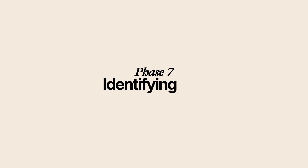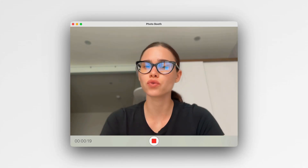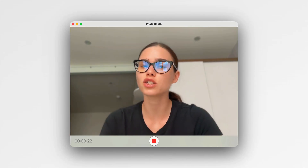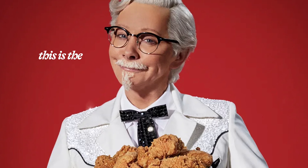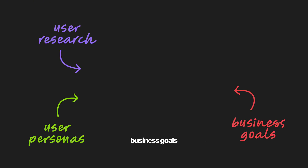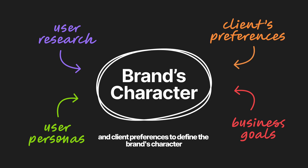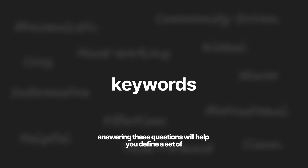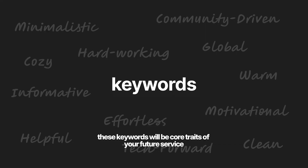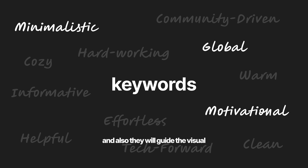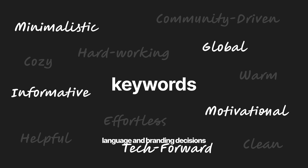Phase seven: identifying the tone of voice. Before jumping into UI research, I highly recommend identifying the tone of voice of the app — this will be the personality of the future service. Use your knowledge from user research, personas, business goals, and client preferences to define the brand's character. Ask yourself: is it formal or casual? Serious or playful? Respectful or irreverent? Matter-of-fact or enthusiastic? Answering these questions will help you define a set of keywords that will guide the visual language and branding decisions.